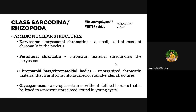Glycogen mass is an inclusion or area in the cytoplasm where stored food (glycogen/stored sugar) is located — found in cysts. These nuclear structures are used for identification of different amoeba species. Karyosome and peripheral chromatin are found in both trophozoites and cysts, but chromatoidal bodies and glycogen mass are found only in cysts.